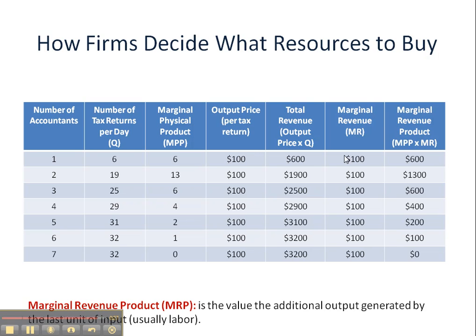To get Marginal Revenue Product — the value of the additional output generated by the last unit of input, usually labor — we take the MPP, Marginal Physical Product, that we ascertained earlier, and multiply it by the Marginal Revenue. That gives us the Marginal Revenue Product, which again shows diminishing marginal returns. So once we've figured out MP and MRP, we're ready to figure out costs, which we will do in our very next video.